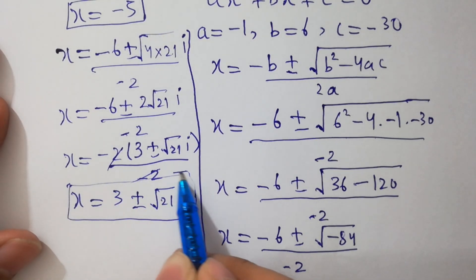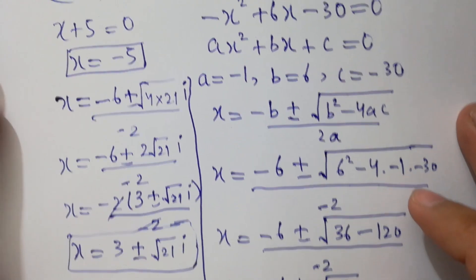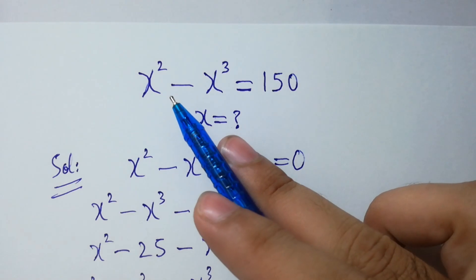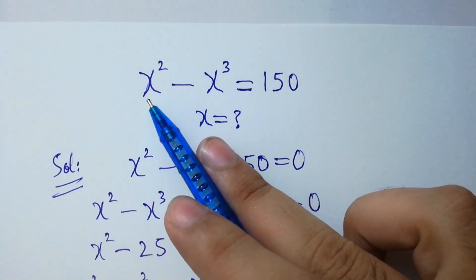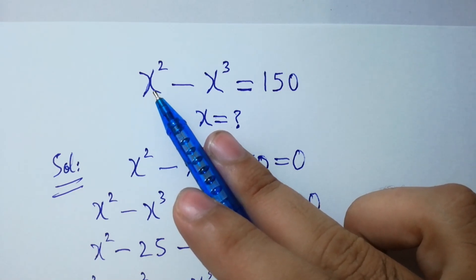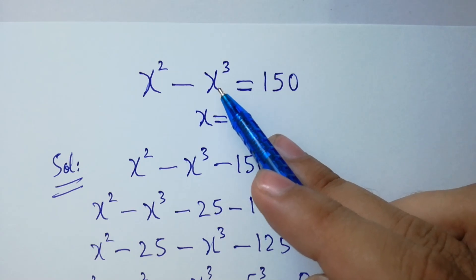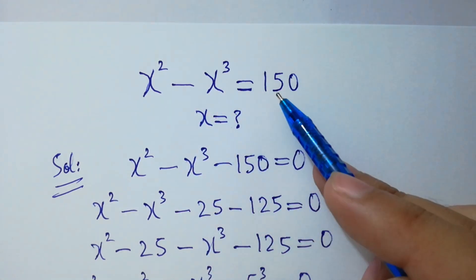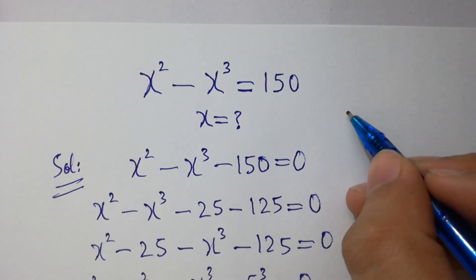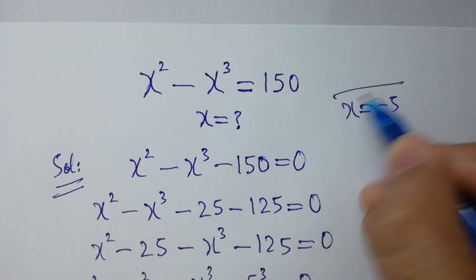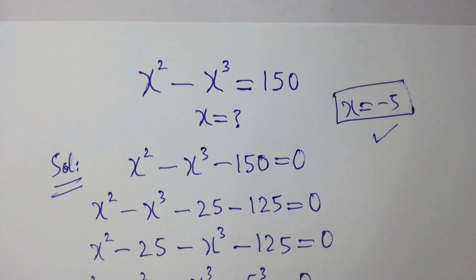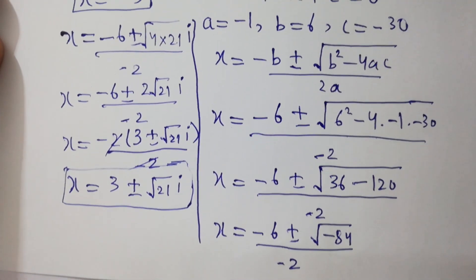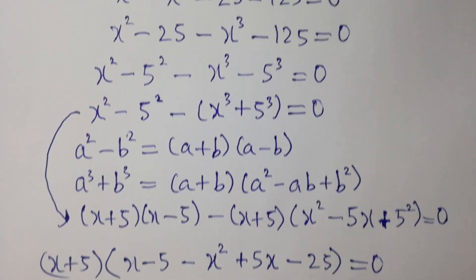So x has three solutions: x₁ equals minus 5, x₂ equals 3 plus square root of 21i, and x₃ equals 3 minus square root of 21i. Let's verify: since x equals minus 5, we get (minus 5) squared minus (minus 5) cubed equals 25 minus (minus 125) equals 25 plus 125 equals 150. This confirms x equals minus 5 is correct. Thanks for watching — please subscribe to get notifications of new videos. Bye!